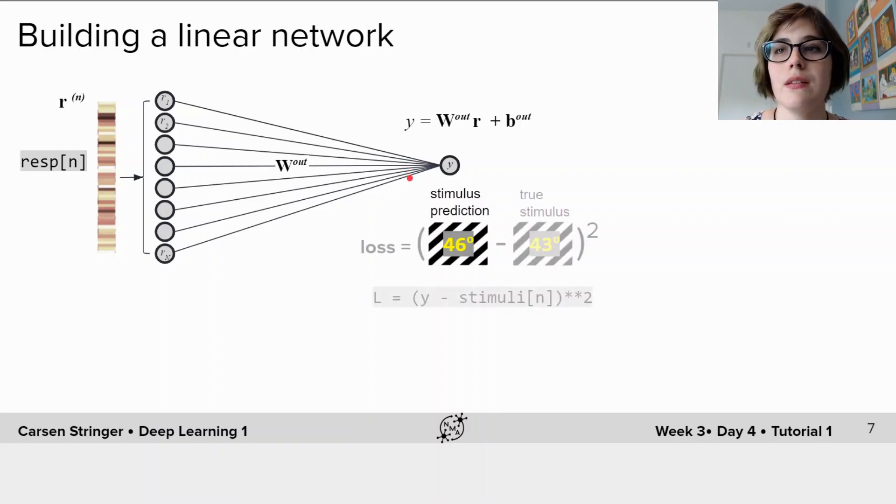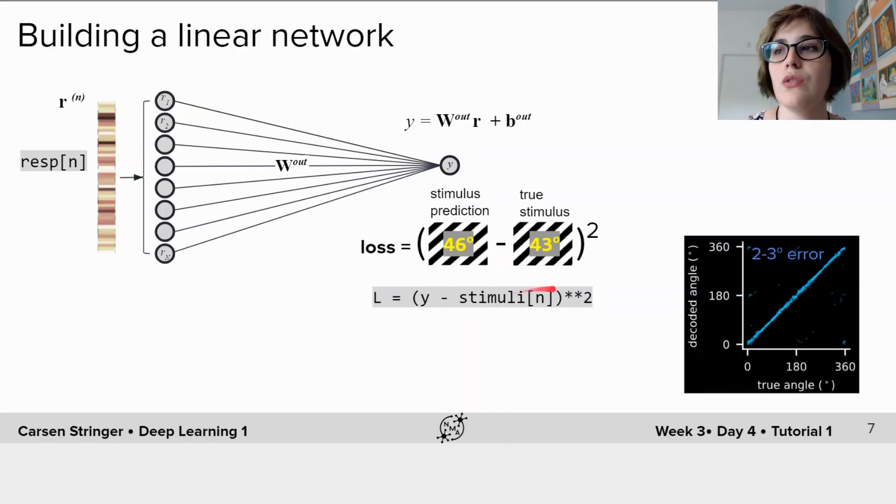When you fit a linear model such as this, you likely minimize the squared error between the stimulus prediction and the true stimulus. This is called the loss function. The solution to minimizing this loss function in a linear model can be found in closed form and you learned how to solve this type of linear regression problem in the first week if you remember. So if we use a simple linear model such as this, we are able to predict the stimulus within two to three degrees. So let's see if we can improve this prediction by using a deep neural network.